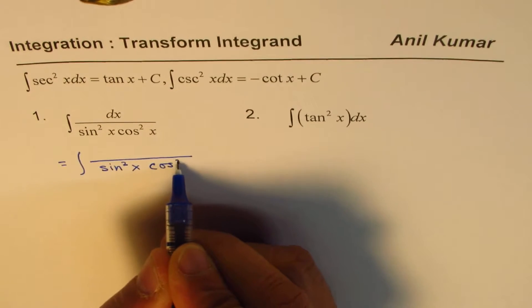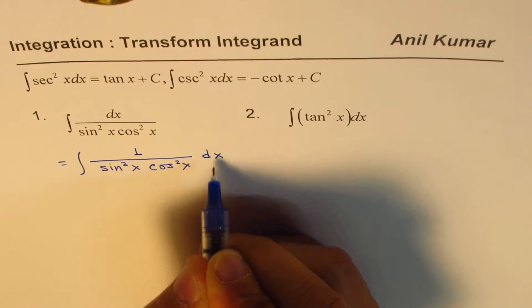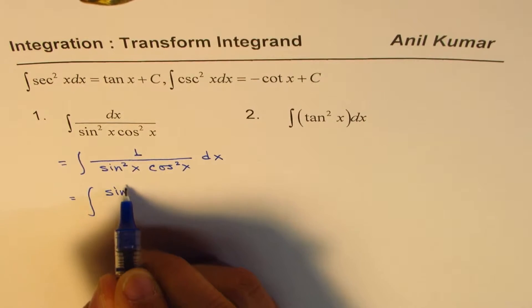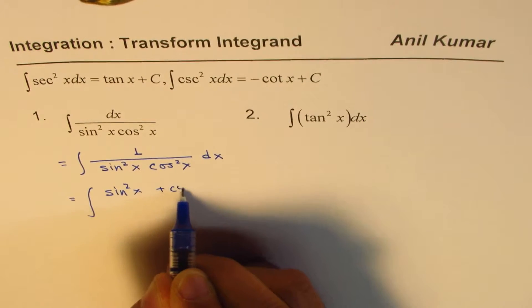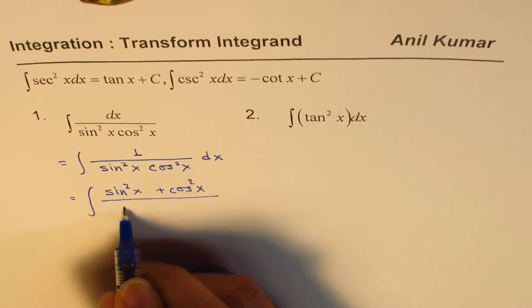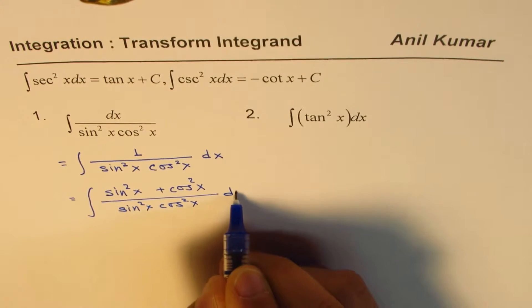Let me show you the steps. Let's say we have one over all this dx. Now, how could you write one as? One could be written as sin square x plus cos square x. That's a Pythagorean identity for trigonometry. And then we have sin square x cos square x in the denominator dx.